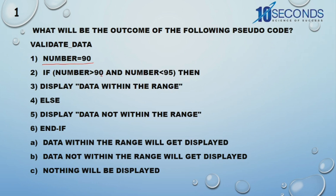We are checking: if number is greater than 90 and number is less than 35. The condition fails because number is 90 — it is not greater than 90 and it is not less than 95. So it will go to the else part, and the output 'data not within the range' will be displayed.